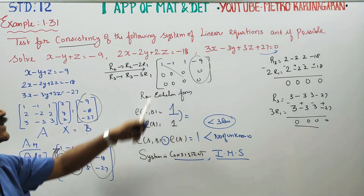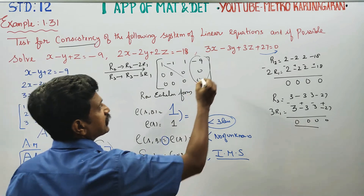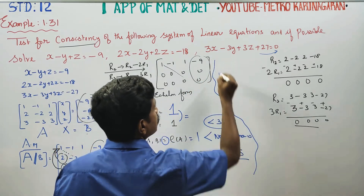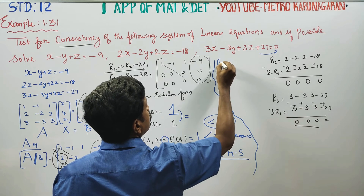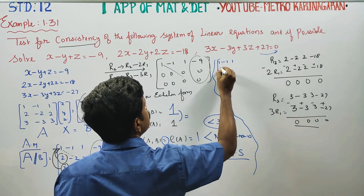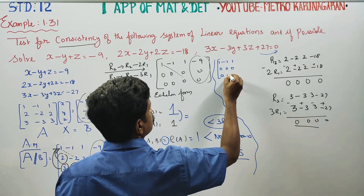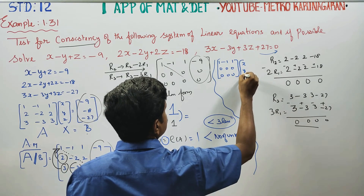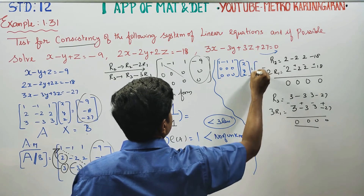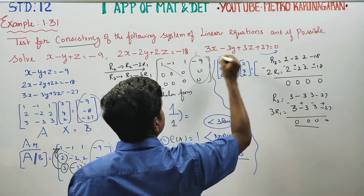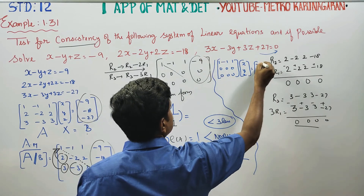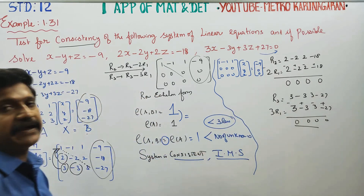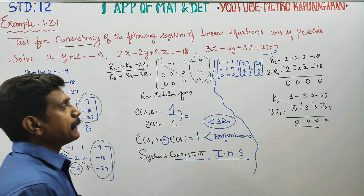Now writing the row echelon matrix form. The reduced matrix gives the row: 1, minus 1, 1, minus 9, with the remaining rows being all zeros.